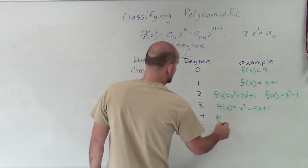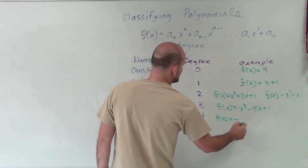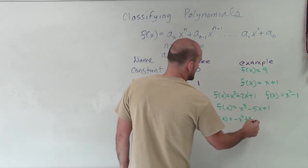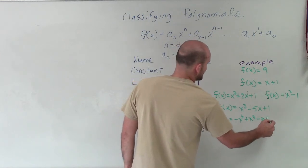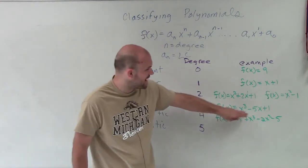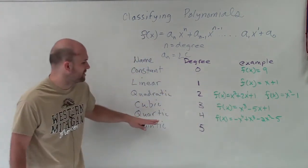A quartic, you could have f(x) = negative x to the fourth plus x cubed minus 2x squared minus 5. So you could see this one has the highest degree is 4. So therefore, it's a quartic.